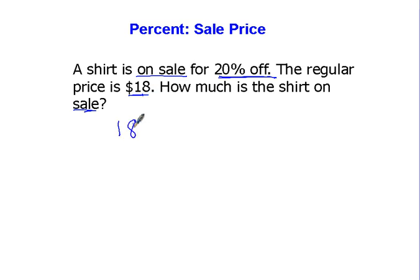The way I do this is I do 18 times 0.20. This 20% is 0.20. That 0 is meaningless. I don't even need it there. 8 times 2 is 16. Carry the 1. 1 times 2 is 2, plus 1 is 3. Move the decimal point over one spot, because I didn't use that 0.